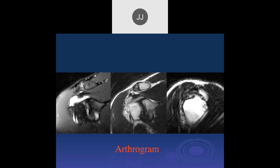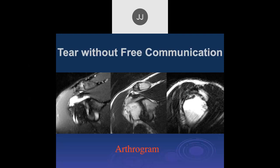This distinction matters for treatment: with chronic tears, you use exercise to try to relieve symptoms before considering surgery. With acute tears, you want to operate promptly — ideally before three months. Once three months pass, you treat it like a chronic tear, which is an entirely different situation.